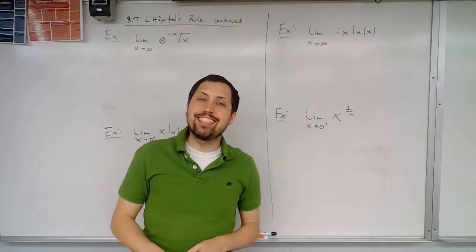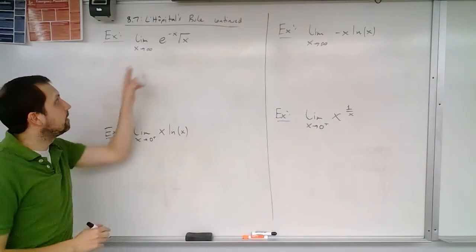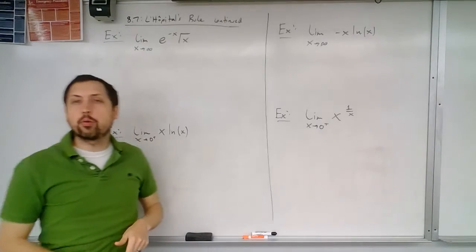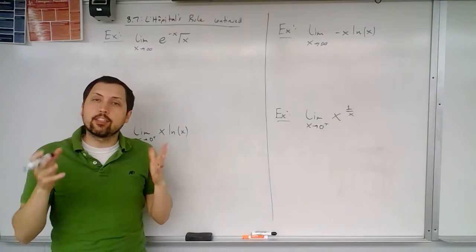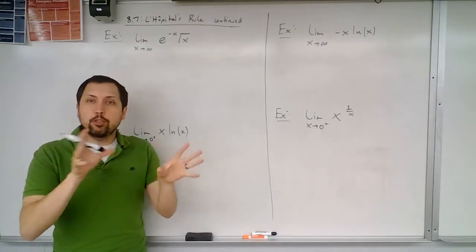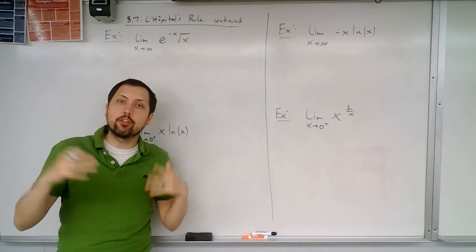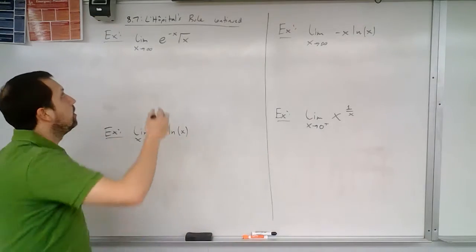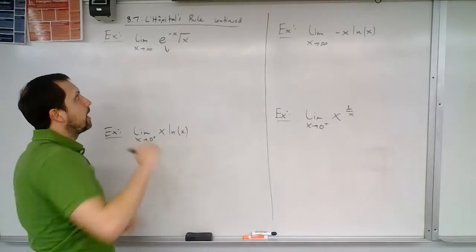Let's take a look at some limit examples now. The limit as x tends to infinity of e to the negative x times the square root of x. Our goal is to think about each of these parts and how they are either working together or working opposed to one another. So e to the negative x — when x is going to infinity, we have e to the negative infinity.